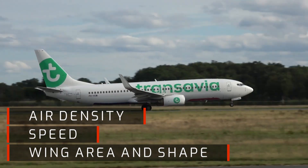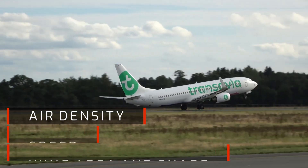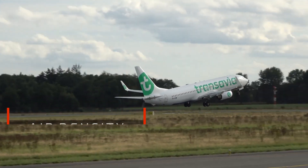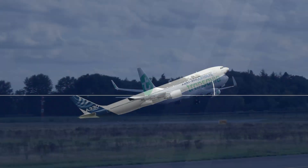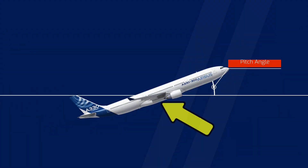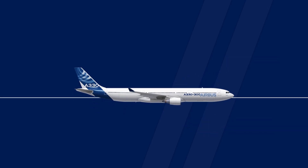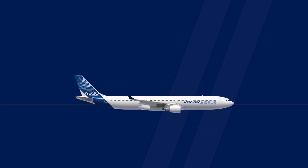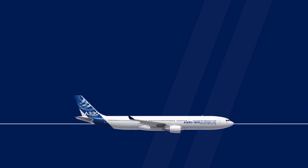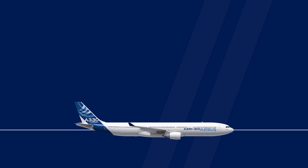But the most important factor to determine whether something will fly is the so-called angle of attack. This is not the pitch angle of the plane, but the angle at which air hits the aircraft. This angle may be slightly different from the pitch angle, but for this video, let's assume they are the same. If a wing travels through air at zero angle of attack, it will not provide any lift at all, no matter the speed.